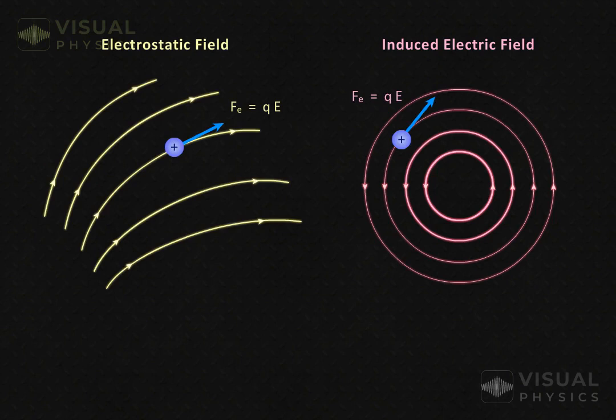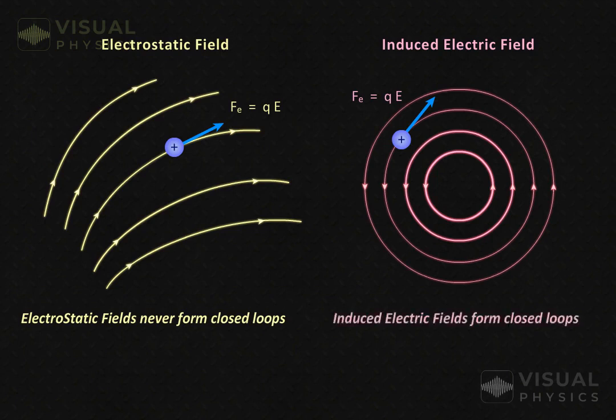However, there is one fundamental difference between the induced electric field and electrostatic field. Electrostatic fields never form closed loops, whereas induced electric fields form closed loops which are symmetric with respect to the center of magnetic field.